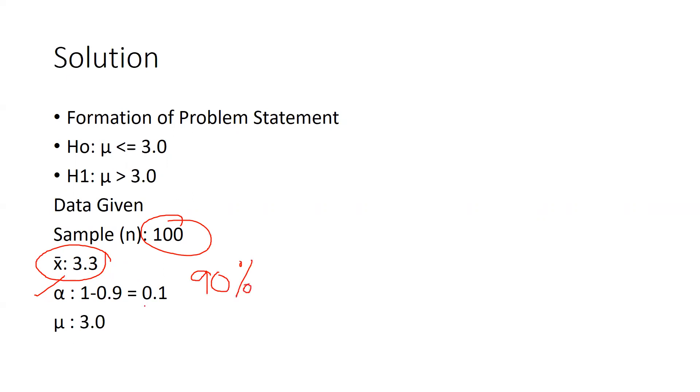We are getting these values at the 90 percent confidence interval. So 1 minus alpha value will be 1 minus 0.9 that would be 0.1 and μ statement would be 3.0. Mu means that could be your population mean.